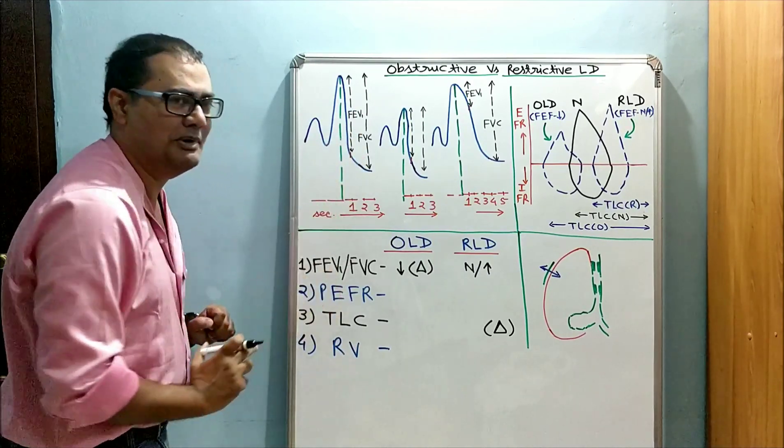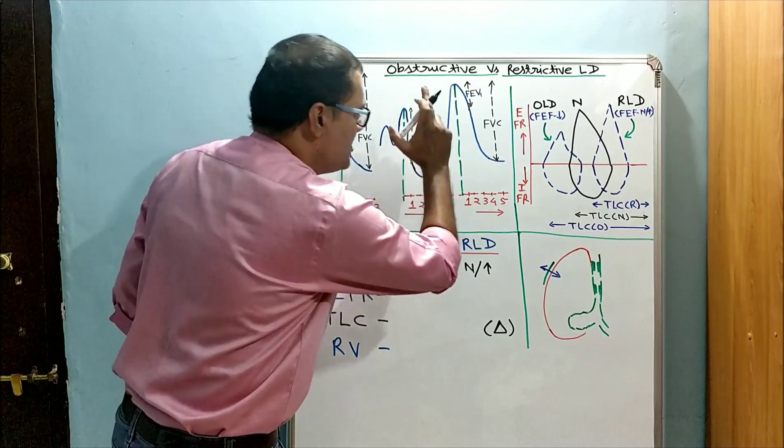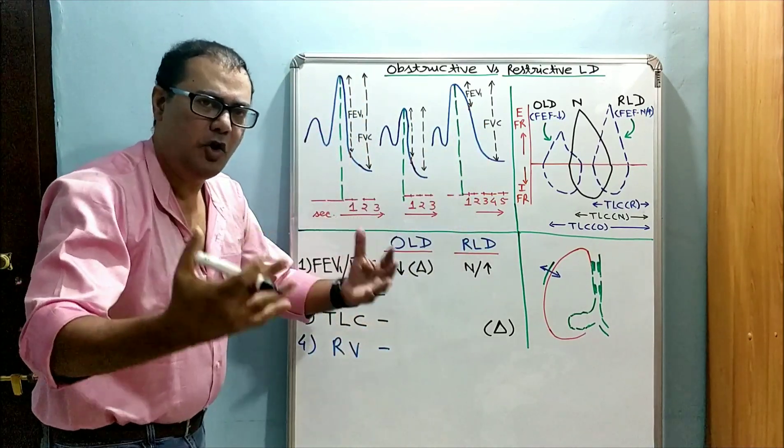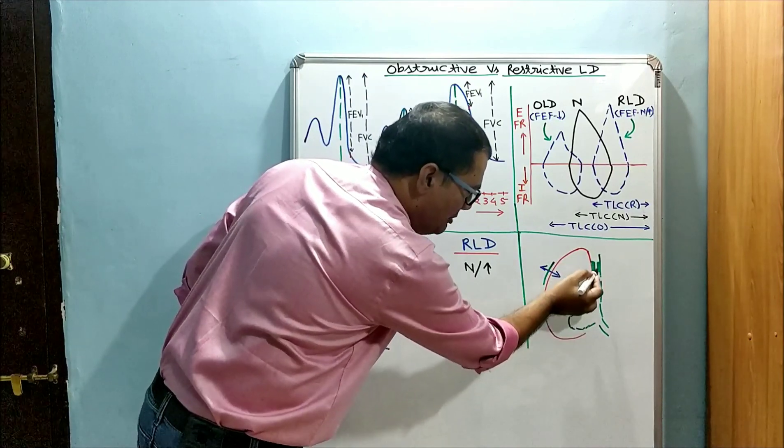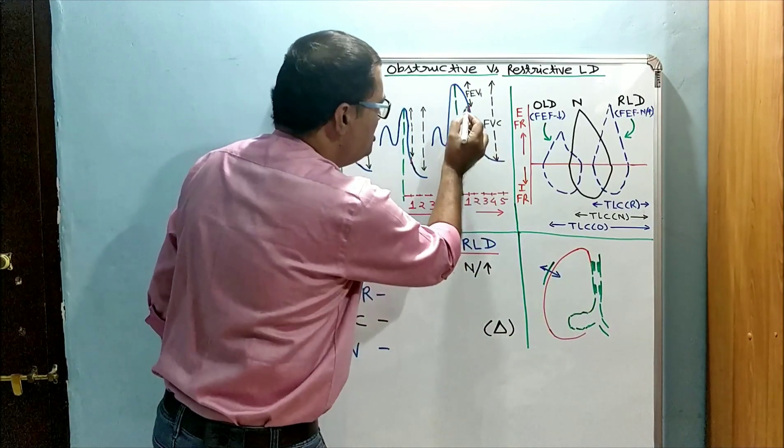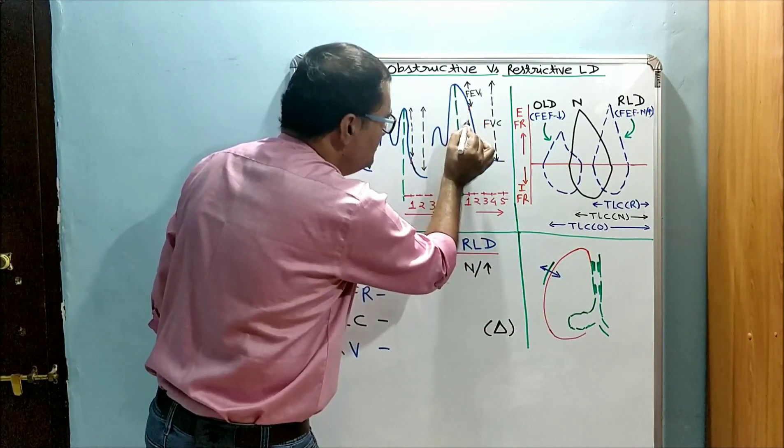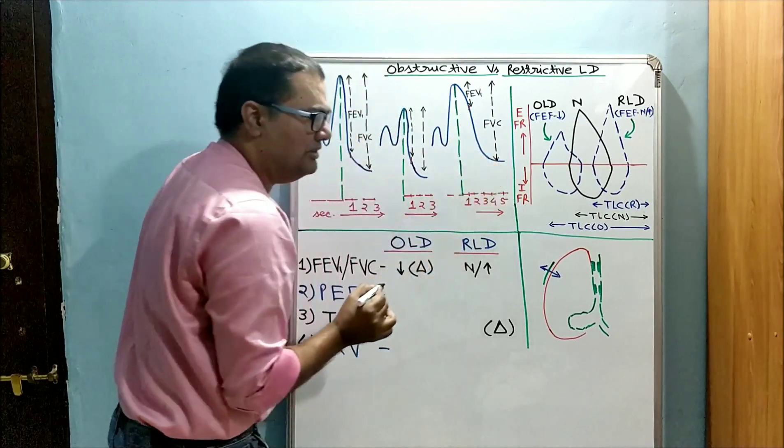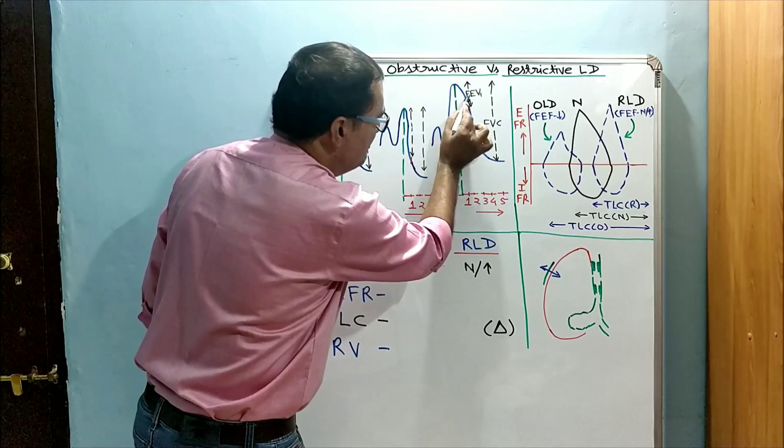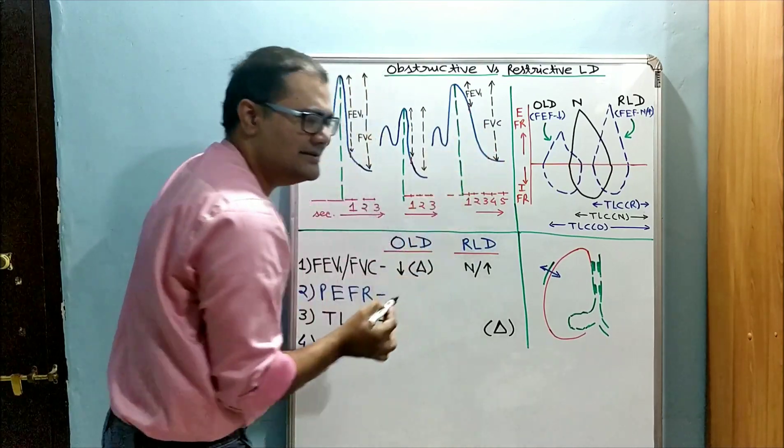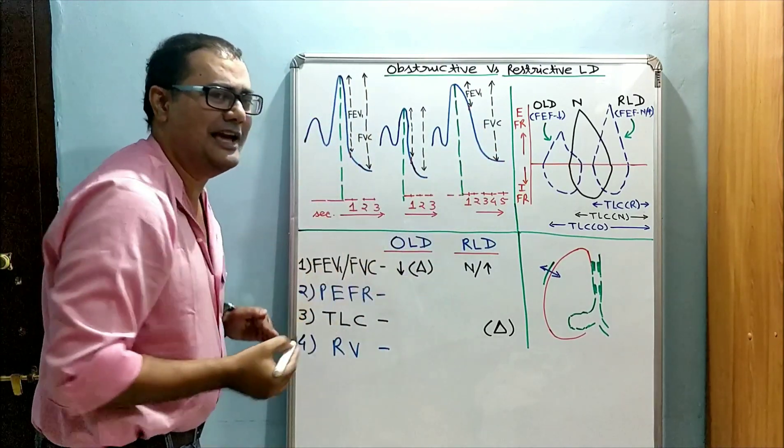Because in obstructive lung disease, in chronic bronchitis or emphysema, there are airway blockages, expiration is slow, prolonged, and incomplete. We can see here, especially, FEV1-FVC ratio is significantly reduced, and this is the diagnostic test.